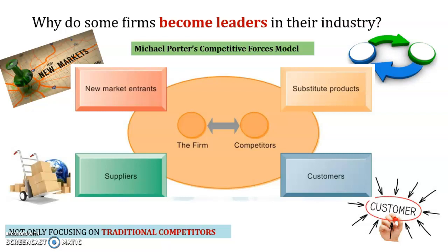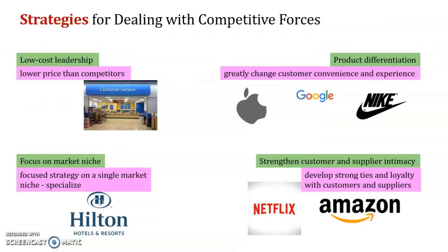Number four is suppliers — you need to understand your suppliers. Products must be affordable and complete enough for your organization to run. Number five is customers — you have to make sure you care about your customers so they don't leave. If they need something, you have to entertain them, or make it easier for them. For example, if they browse your website and have a problem, they can find the solution easily. This is what Michael Porter suggests.